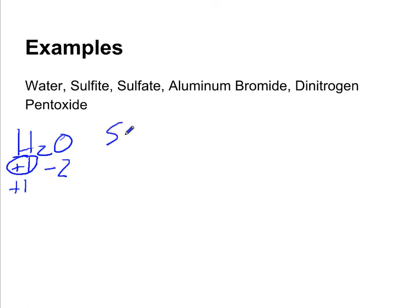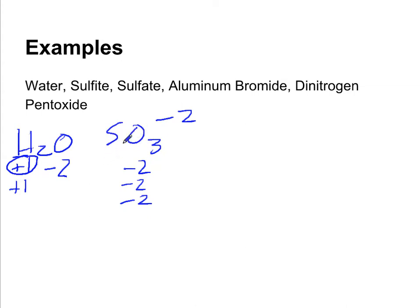Let's look at sulfite, which is SO₃ with a minus two charge. We start with oxygen: there are three oxygens, each with a negative two oxidation state, giving a total of negative six. We need to figure out what the oxidation state for sulfur is. In a polyatomic ion, the oxidation states must add up to equal the charge on the ion. So we need something that, when added to negative six, equals negative two — that would be plus four. So our one sulfur atom has an oxidation state of plus four.